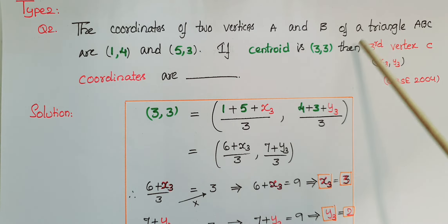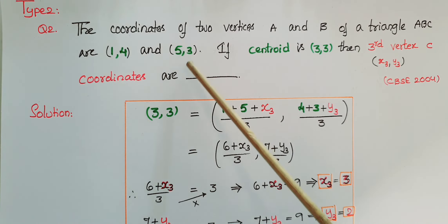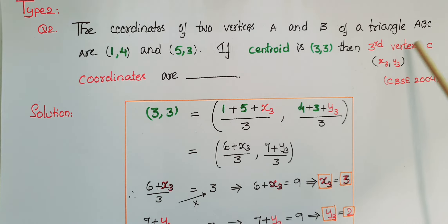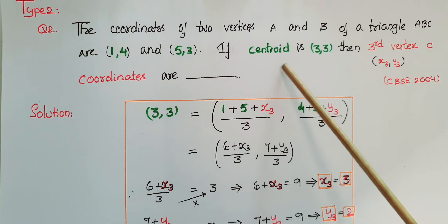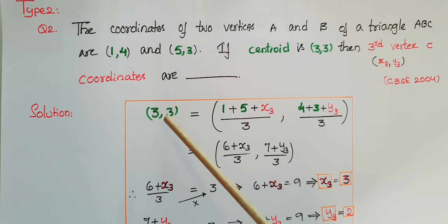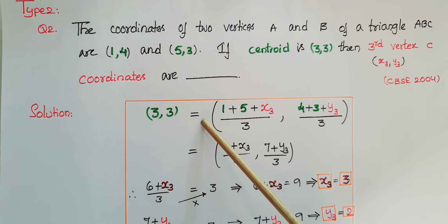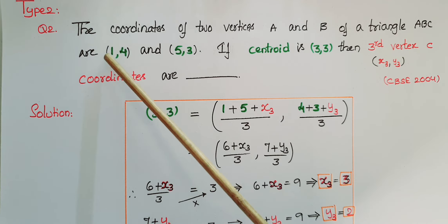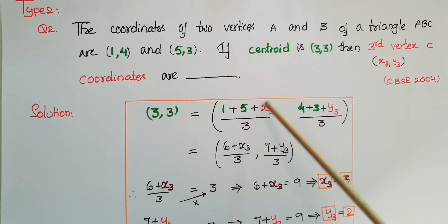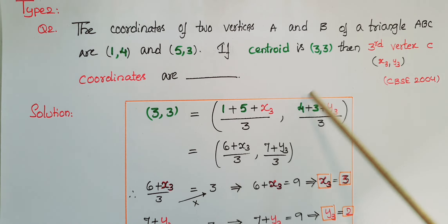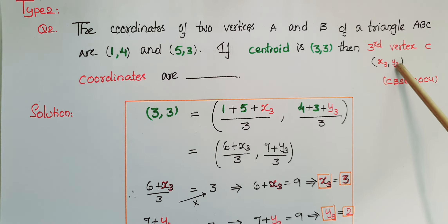This is the second type of question: the coordinates of two vertices A and B of triangle ABC are (1, 4) and (5, 3). If the centroid is (3, 3), find the third vertex. Here two vertices of the triangle are given and the centroid is also given; we have to find the third vertex coordinates. So centroid (3, 3) equals the sum of all x-coordinates: 1 + 5 + x3, where x3 is the unknown third vertex x-coordinate, divided by 3.